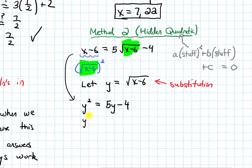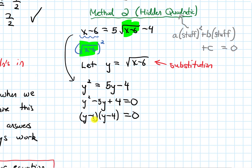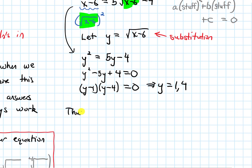Moving all terms to one side, I get y squared minus 5y plus 4 equals zero. I can factor this as y minus 1 times y minus 4 equals zero — this was a lot easier to factor than in Method 1. So y equals 1 or y equals 4. But that's y; I need x. Plugging back into the substitution: either root x minus 6 equals 1, or root x minus 6 equals 4.